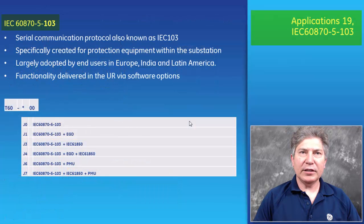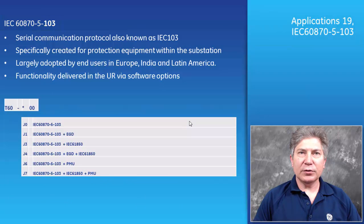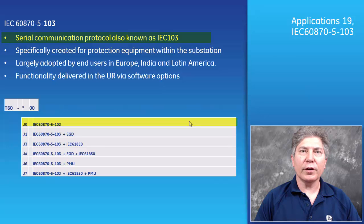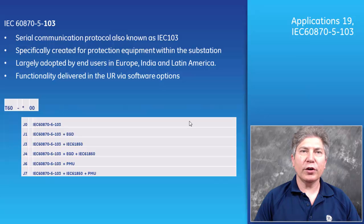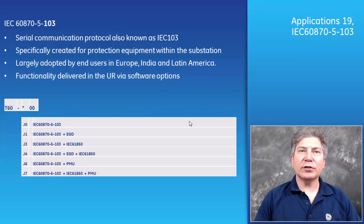Application 19: IEC 60870-5-103. UR devices support the IEC 60870-5-103 communication protocol, also known as IEC 103. This standard defines a multipoint communication protocol via which information can be exchanged between a control system, supervisor or RTU, and one or more protection devices. The control system is the master and the protection devices are the slaves. This protocol is mainly used in Europe, India, and Latin America, and is available via the RS-485 port.